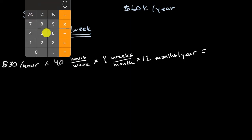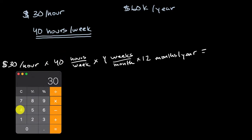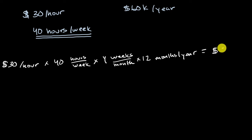So I took 30 times, let me do it down here so you can see, times 40 hours in a week, times four weeks, times 12 months in a year, I got $57,600.